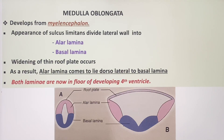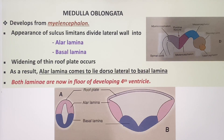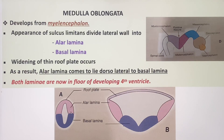Now coming to the development of the medulla oblongata — it develops from the myelencephalon. The appearance of the sulcus limitans divides the lateral wall into the alar lamina and basal lamina.